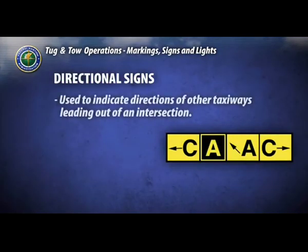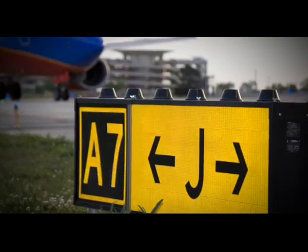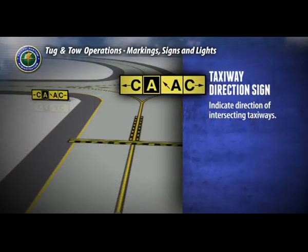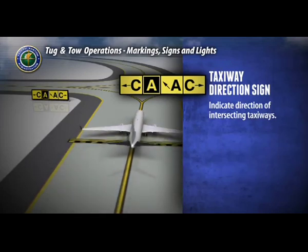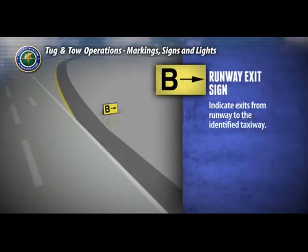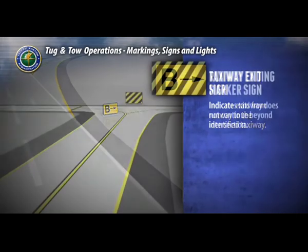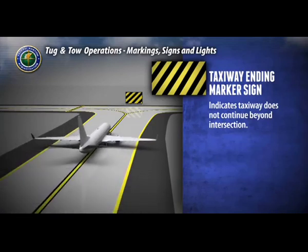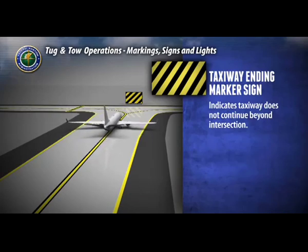Directional signs are used to indicate directions of other taxiways leading out of an intersection. These signs incorporate black inscriptions on yellow backgrounds and always contain arrows. Taxiway direction signs indicate the direction of intersecting taxiways—for example, taxiway Charlie is to the left and right, and Alpha, the taxiway on which you are currently located, continues ahead and to the left. Runway exit signs indicate exits from the runway to the identified taxiway. The taxiway ending marker sign indicates that the taxiway does not continue beyond the intersection and is located on the far side of the intersection.